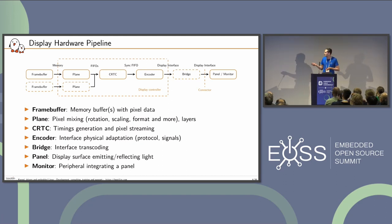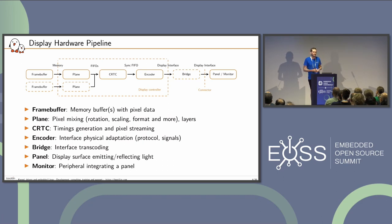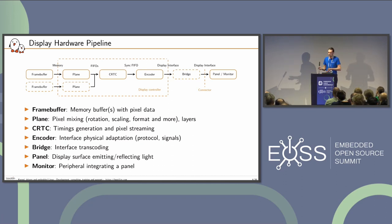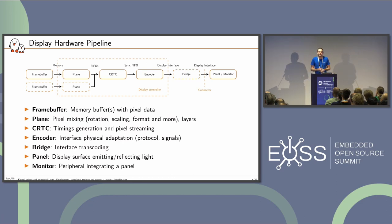At the end of the chain, you get a final connector where people plug a cable or have a panel connected. A panel is something always connected to your system — like a smartphone, tablet, or laptop screen. A monitor works more like a cable with a particular connector that you can switch. This distinction has some implications we'll explore.